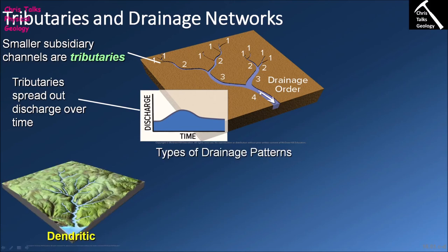The shape of the environment the river is in affects the morphology of the drainage network. The most common type is a dendritic drainage network, where one main channel is fed by numerous tributaries in an area of higher elevation such as hills and mountains. Viewed from the top down, this gives the river an appearance like a tree, which is why it's referred to as dendritic.